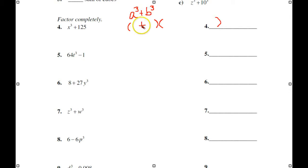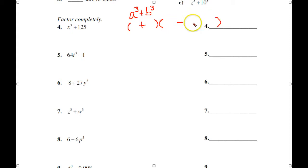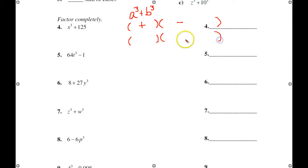If you have a plus here, the middle sign of your three-term trinomial will be its opposite sign — so that's a negative. The first and last of this trinomial are always plus. We can do the negative one as well because it's so similar. If this were an A cubed minus B cubed, the only difference is the sign here would be negative and the sign here would be positive. Otherwise, everything else is the same.